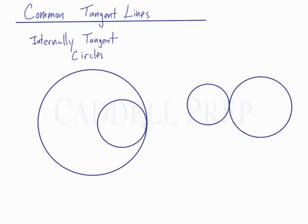And the question you may get is, how many common tangent lines do these two circles have? And the answer is just one. We could draw a tangent line coming down like this. They have this tangent line in common.